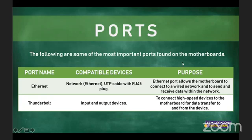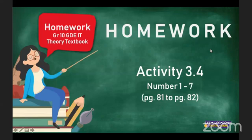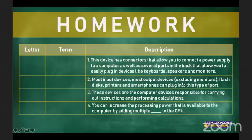That's it on ports, Grade 10. I hope that clarifies a few things, as there were one or two homework questions based on this. Let's look at the homework answers. I asked you to look at section 3.4 and section 1.2.7. For question 1 we need to match column A to column B. The options in column B include: processing devices, cores, USB, RAM, CPU, motherboard, GPU, and HDMI.